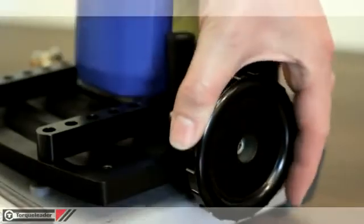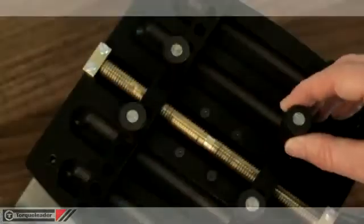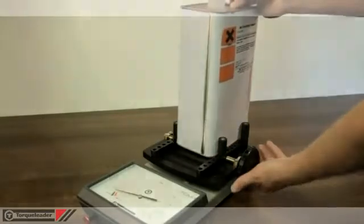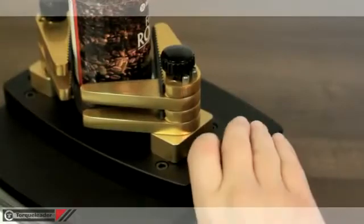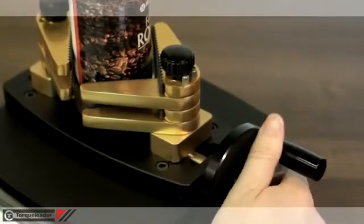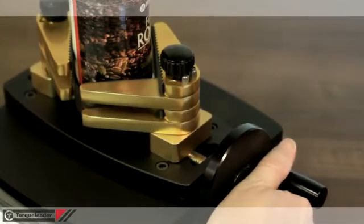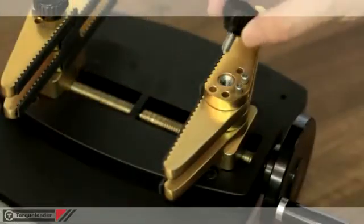The standard clamp features four pegs to grip the container. These can be positioned to accommodate containers up to 200 millimeters in size. The premium clamp is designed to grip delicate or unusual shaped containers up to 135 millimeters in size. The vice jaws can be set in multiple positions.